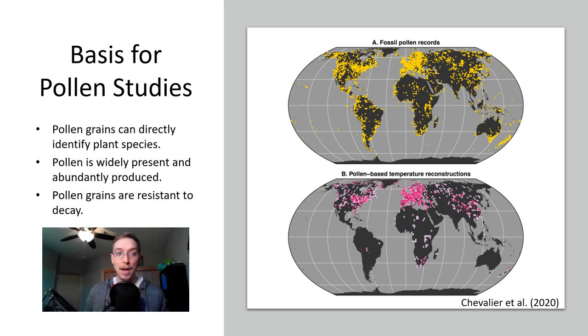So the basis for pollen studies: pollen grains can directly identify various plant species, pollen is widely present and abundantly produced, and pollen grains are quite resistant to decay. If we look at A and B in this figure from Chevalier et al. in 2020, this is a new one, I'll have this available. It is an awesome paper learning all about how paleoclimate is reconstructed using pollen.